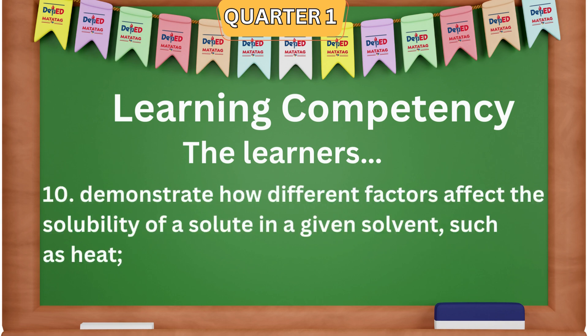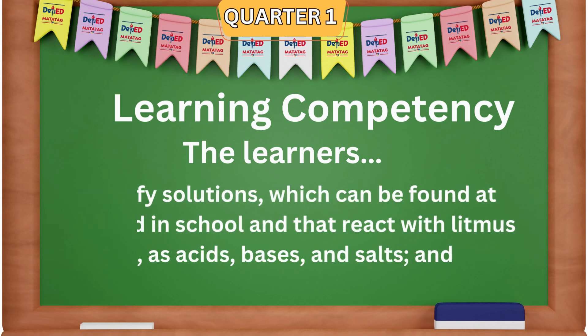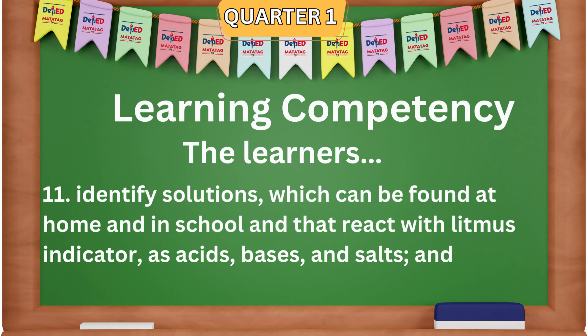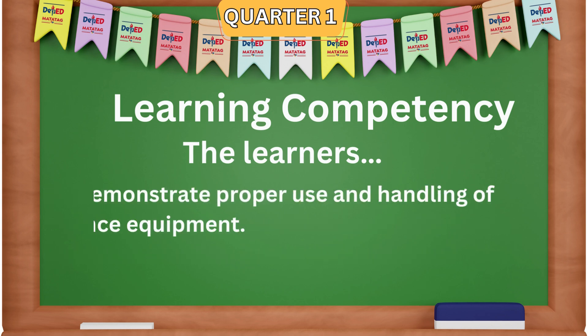Learning Competency 10: Demonstrate how different factors affect the solubility of a solute in a given solvent, such as heat. Learning Competency 11: Identify solutions which can be found at home and in school, and that react with litmus indicator as acids, bases, and salts. Learning Competency 12: Demonstrate proper use and handling of science equipment.